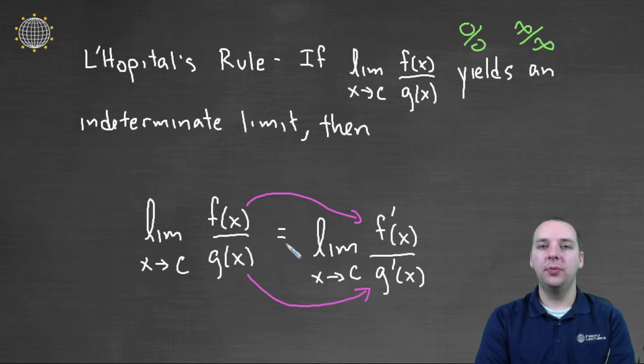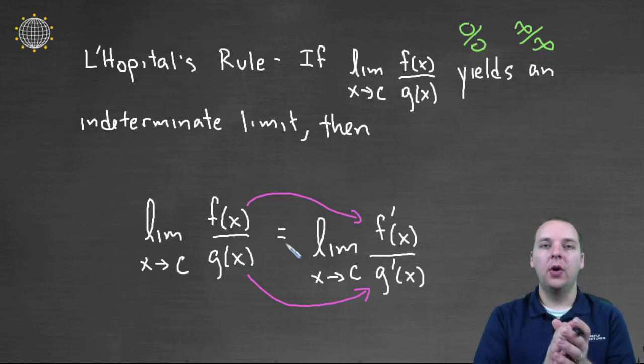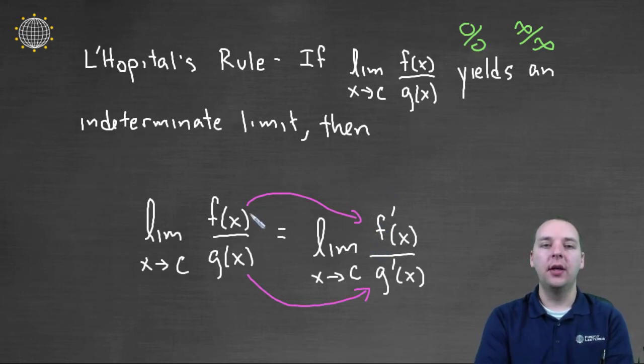You can see why this would be nice—when you differentiate things, they get smaller, simpler, or at least different. What L'Hopital's rule is also doing behind the scenes is comparing the rates of growth of f compared to g, because that's what derivatives tell you. If f grew much faster than g, then not only would the original limit be infinity, but so would the derivative limit, because f' would be larger than g'.